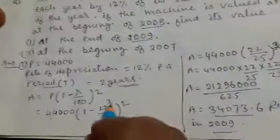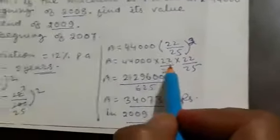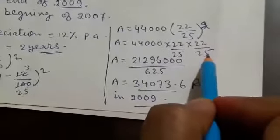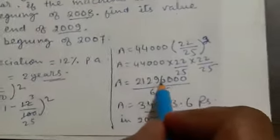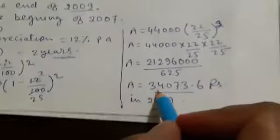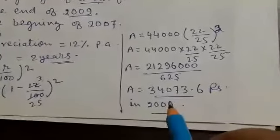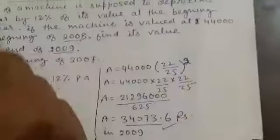Simplifying: 12/100 reduces to 3/25. So the amount is 44,000 into (25 minus 3)/25, which is 22/25. This gives 44,000 into 22/25 squared, equal to 44,000 into 22 into 22 upon 625. Dividing 21,296,000 by 625 gives 34,073.6 rupees. So 34,073.6 rupees will be the value at the end of 2009.